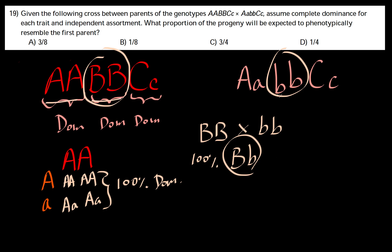Crossing A and crossing B, all the progeny will be 100% phenotypically the same as the first parent.